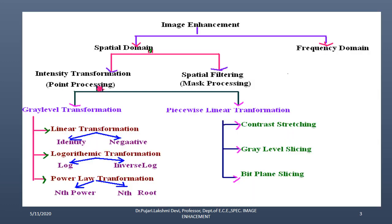Looking at the basic hierarchy of image enhancement in this slide, image enhancement is divided into two types: one is spatial domain concepts and the other is frequency domain. These are the two main methods for improving the quality of an image through image enhancement.